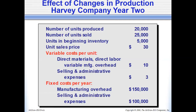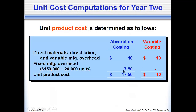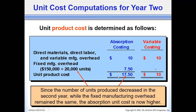In year two, sales remain the same at 25,000 units, but units produced drop to 20,000. The fixed manufacturing overhead per unit changes: $150,000 divided by 20,000 equals $7.50. With the decrease in units produced, the per unit fixed cost increases. This is because in cost behavior, there is an inverse relationship between total fixed manufacturing overhead and the number of units produced — when one increases, the other decreases.